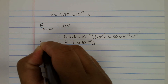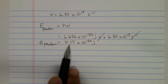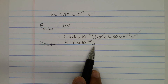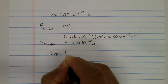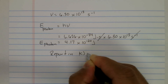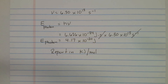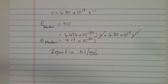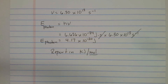So the energy of the photon is 4.17 times 10 to the minus 20 joules. We also want to report this in kilojoules per mole. As I tell my students, very rarely are we focusing on one photon or one molecule — usually we deal with many, and so we report in terms of moles. So it makes sense to report this in kilojoules per mole.